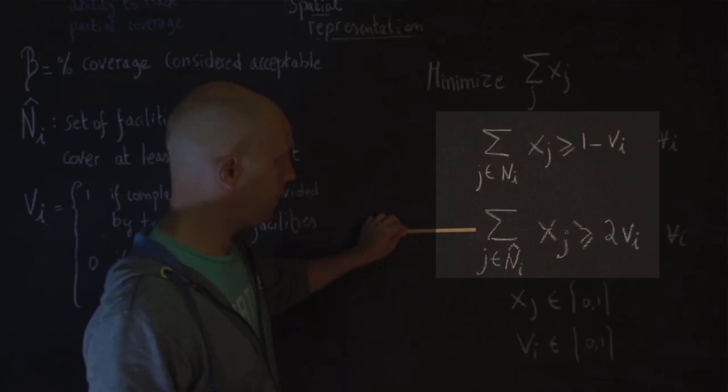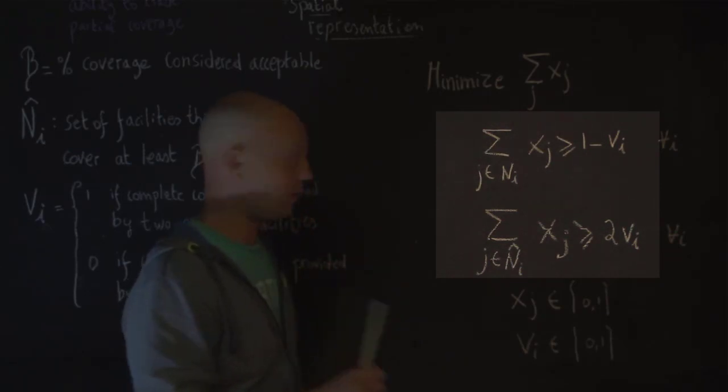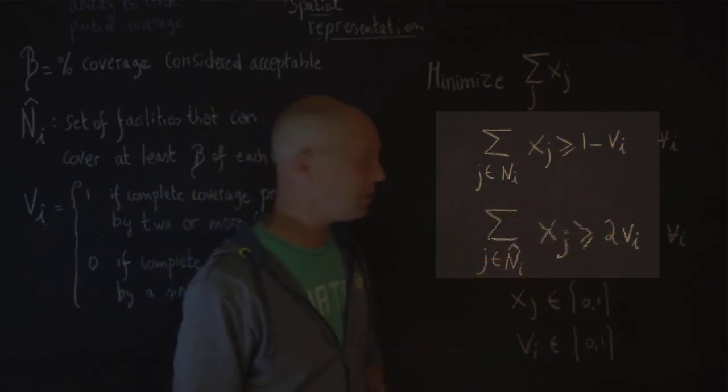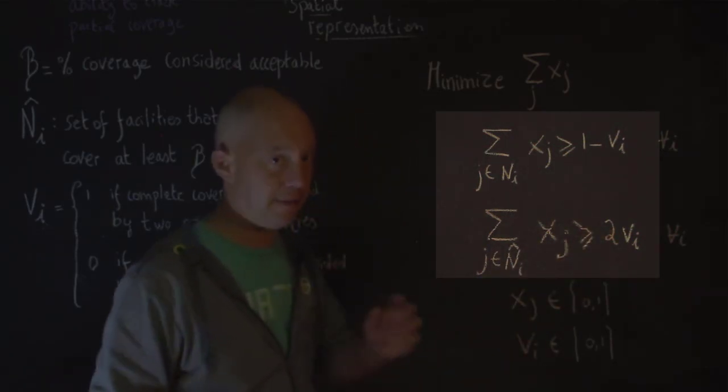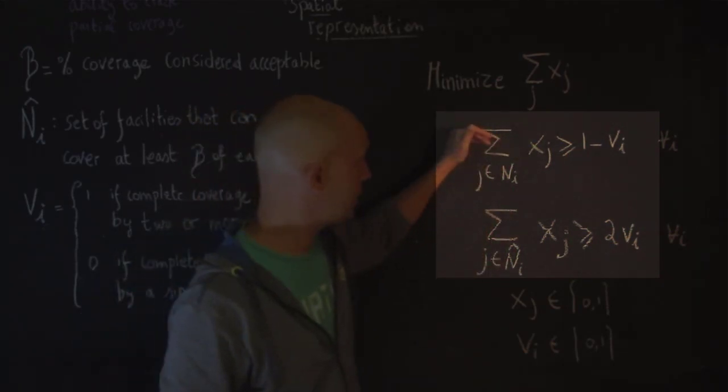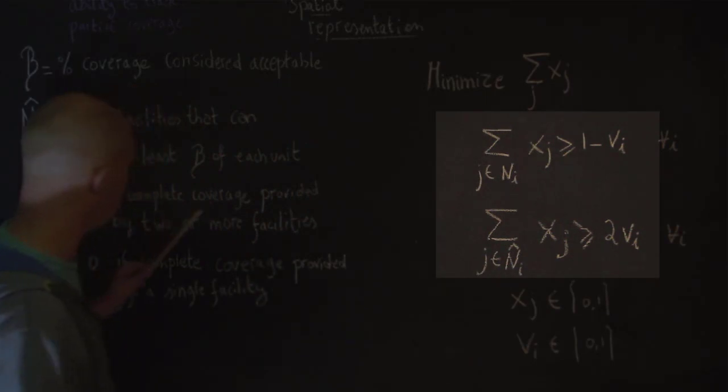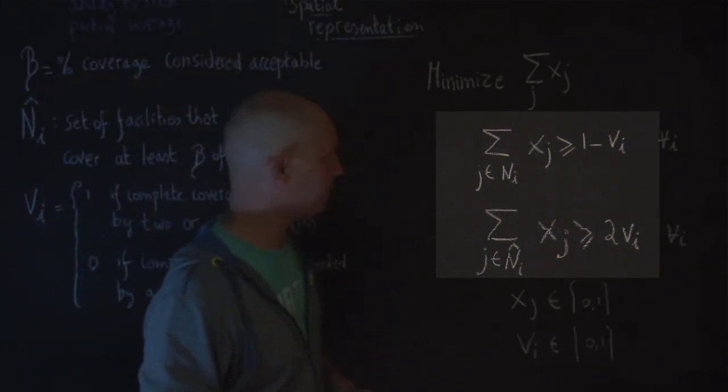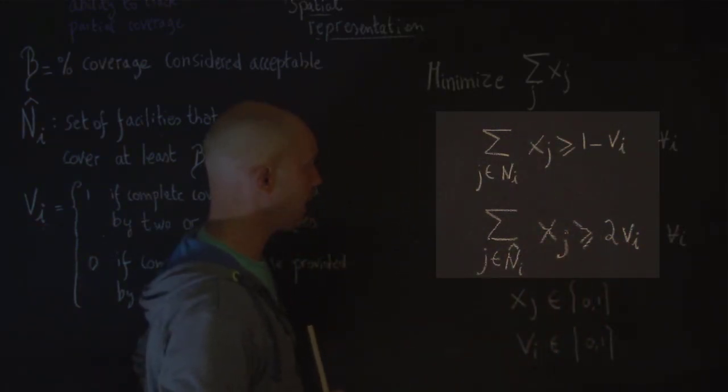Now, the second constraint is a little bit new, because now we have the set of facilities here that can provide partial coverage to the demand. Remember, this is N sub i with a hat. So, the summation of these facilities that can provide partial coverage should be greater or equal to 2 times vi. Now, if vi is zero, then we don't need to have any facilities that can provide partial coverage. Because if vi is zero, then that constraint must be met. If vi is equal to 1, that means the complete coverage can be provided by two or more facilities based on what we have seen before. So, if vi is equal to 1, so there must be at least two facilities that can provide partial coverage.